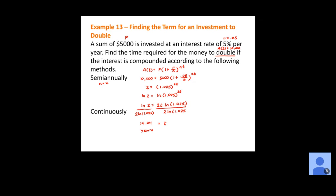For continuous compounding, we use the formula A(T) equals P times e to the RT. All values stay the same: A(T) equals 10,000, principal is 5,000, rate is 0.05, and we're looking for T. First divide by 5,000: 2 equals e to the 0.05T. Take the natural log of both sides: natural log of 2 equals natural log of e to the 0.05T. The property says natural log of e to a power equals that exponent, so we get natural log of 2 equals 0.05T.